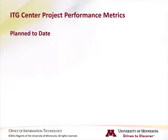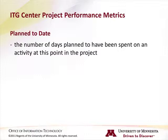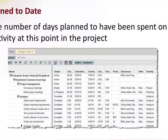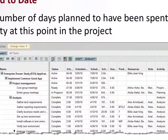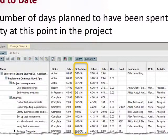Plan to date. Plan to date is the number of days planned to have been spent on an activity at this point in the project. This information is taken from the work plan and it takes into account when tasks were scheduled to start and to finish.